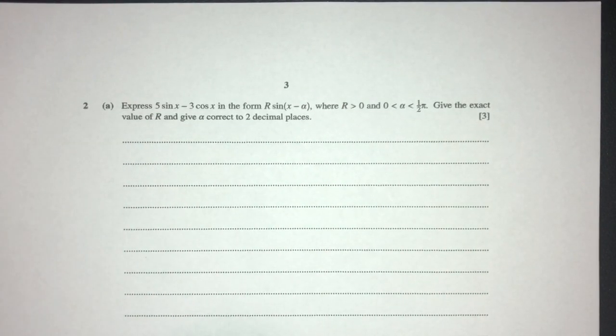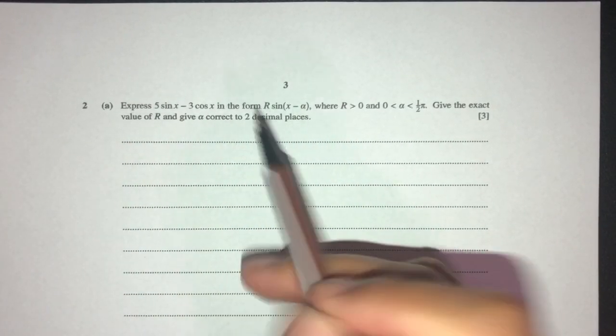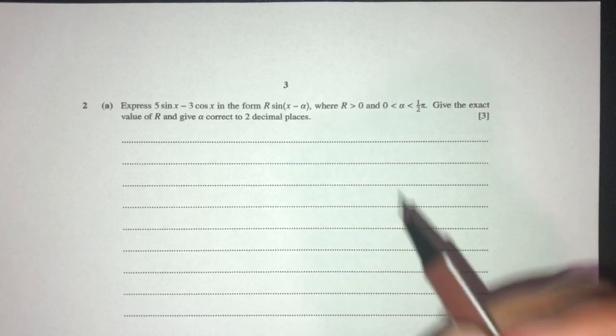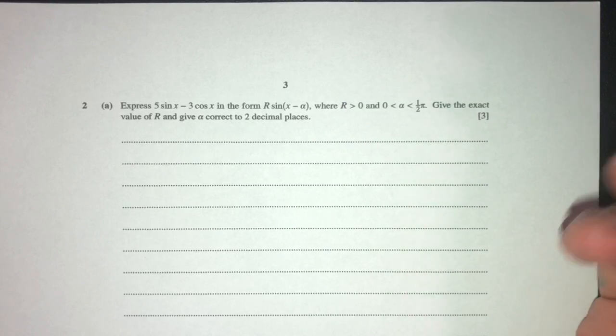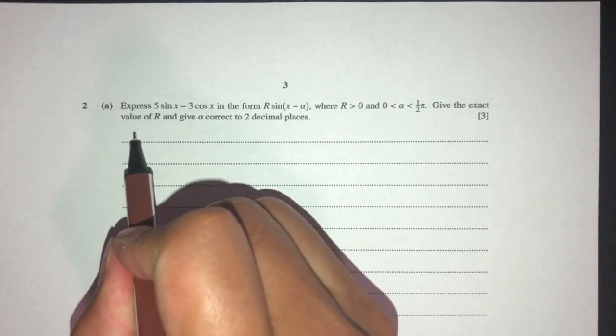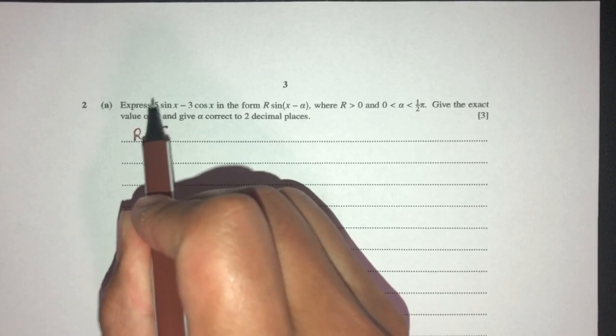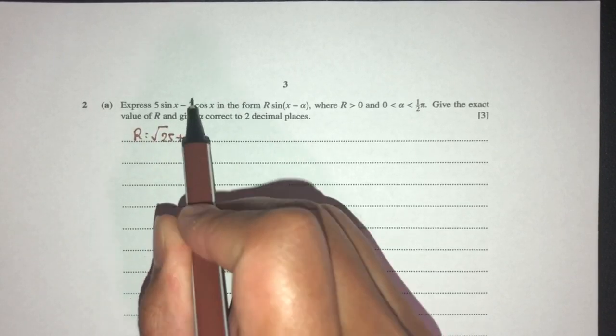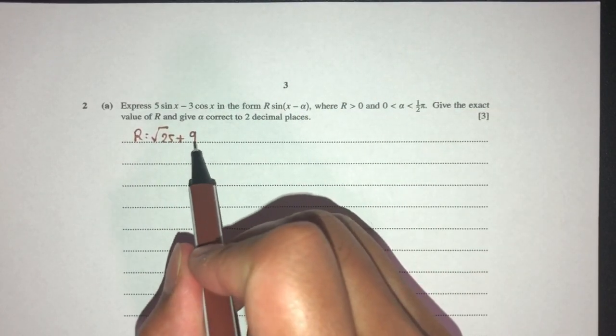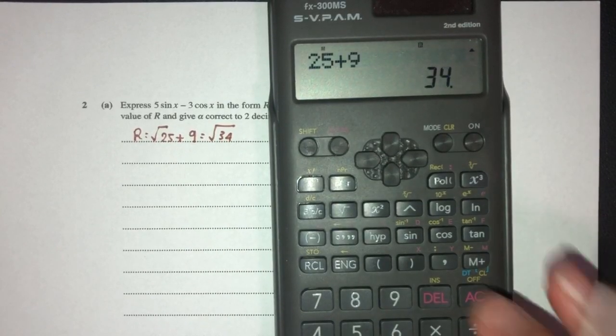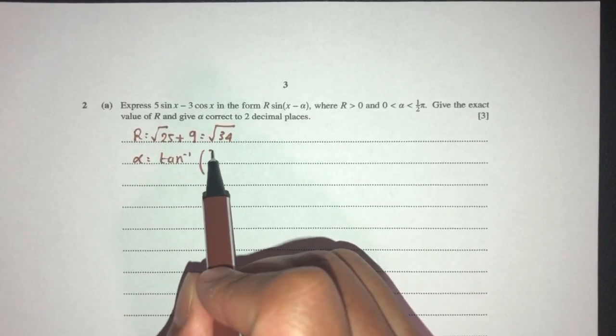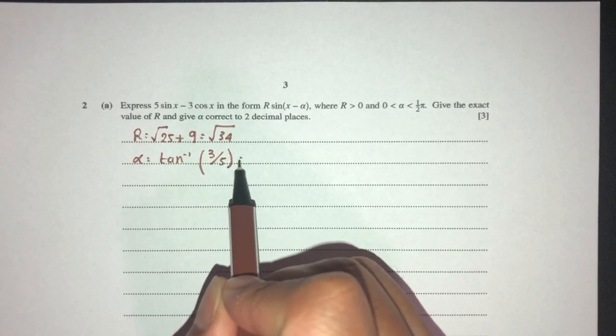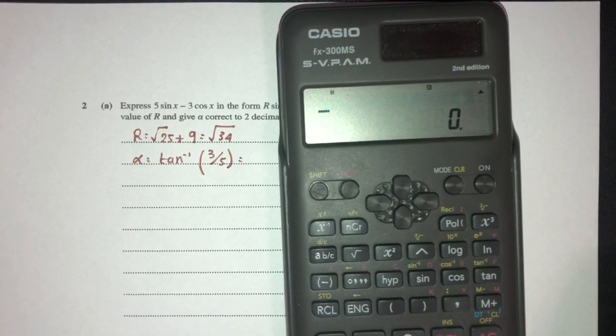Now let's move on to question number two. So here we have to express this whole thing in this form, where r is a positive value and alpha is between 0 to π/2 radians. So let's try to find those values. Again, r is a formula we have to know. r is simply square root of 5 squared is 25 minus 3 squared - the minus sign doesn't really matter - that should be 9. That should be root of 34. So alpha is simply tan inverse of 3, we don't care about the sign, it should be over 5. Again, these are formulas that we have to know to solve this.